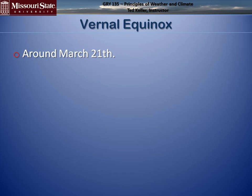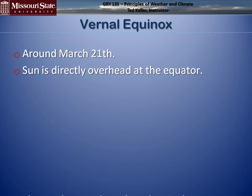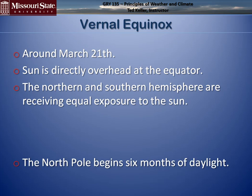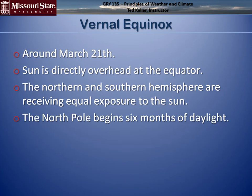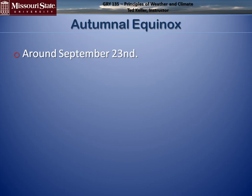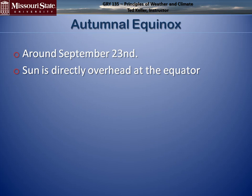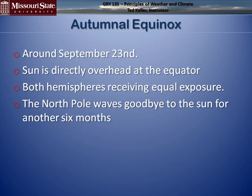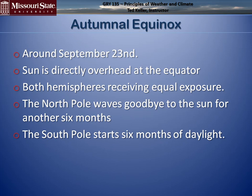At the spring equinox around March 21st, the Sun is directly overhead at the equator, and the northern and southern hemispheres receive equal exposure to sunlight. The North Pole begins six months of daylight; the South Pole begins six months of darkness. Around September 23rd, we have the autumnal equinox — the Sun is again directly overhead at the equator, both hemispheres receive equal exposure, the North Pole waves goodbye to the Sun, and the South Pole starts six months of daylight.